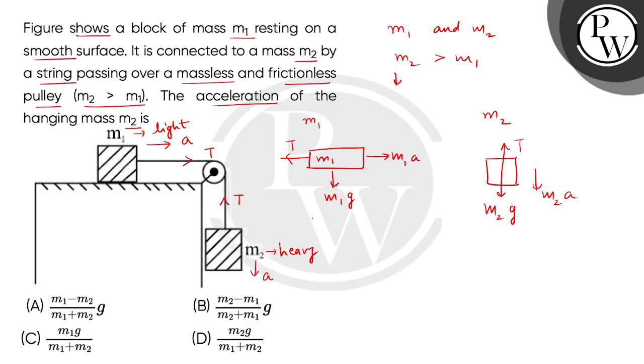What will we find from this diagram? T equals M1A. We will find equation number 1. And we will check from the second diagram. M2A equals M2G minus M1A.